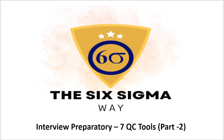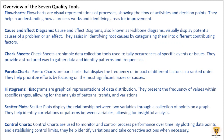Let's start with the overview of the 7 quality tools. The first quality tool is flowcharts — a visual representation of processes showing the flow of activities and decision points. Cause and effect diagrams, also called Ishikawa or fishbone diagrams, represent potential causes of a problem or effect and are used to identify root causes.